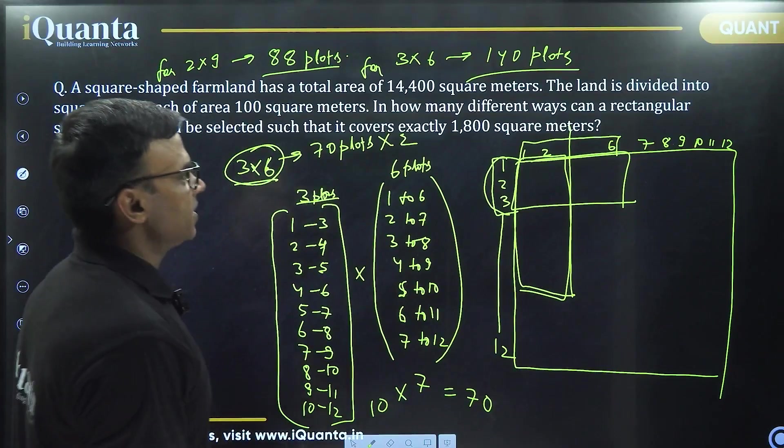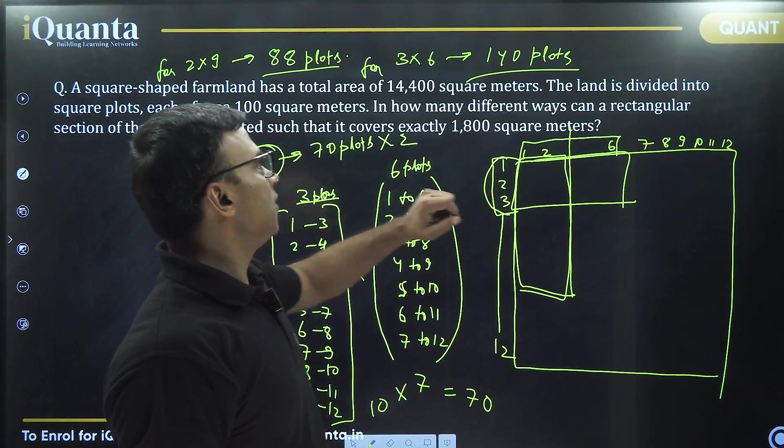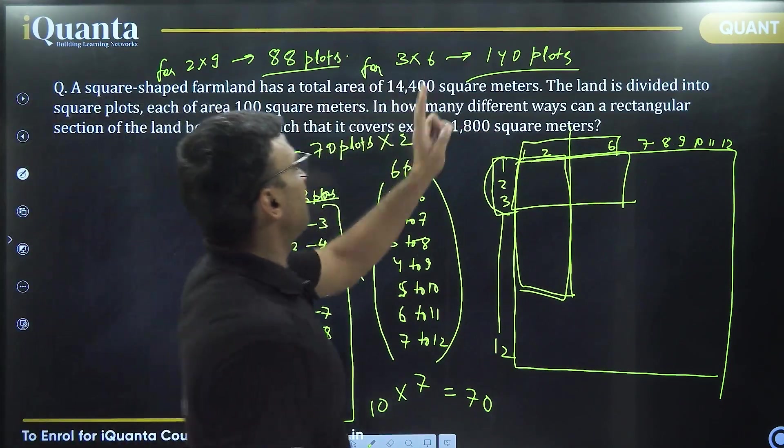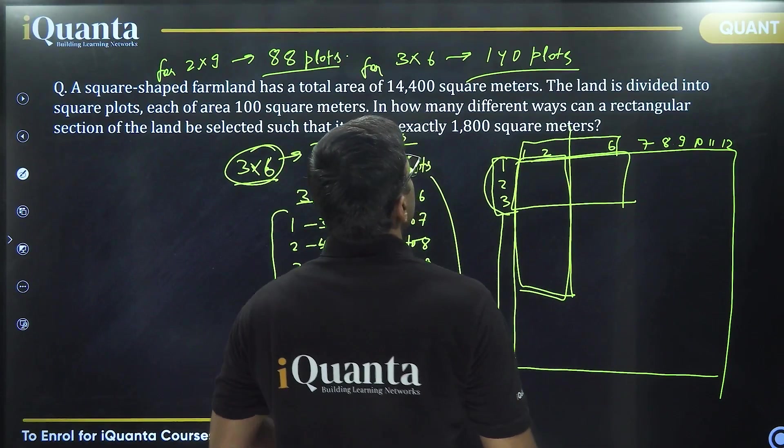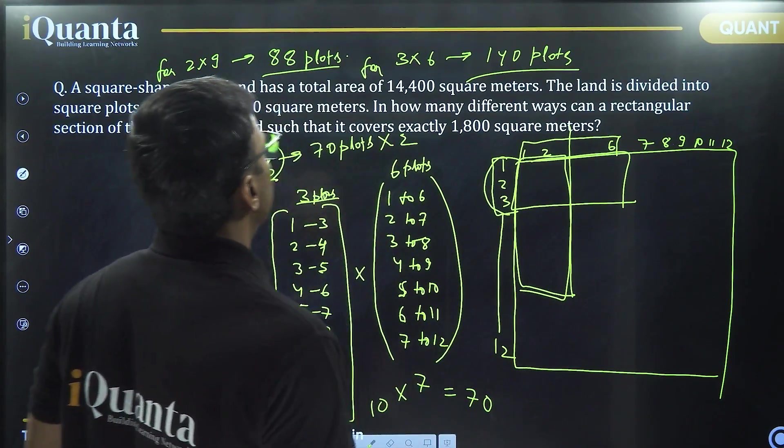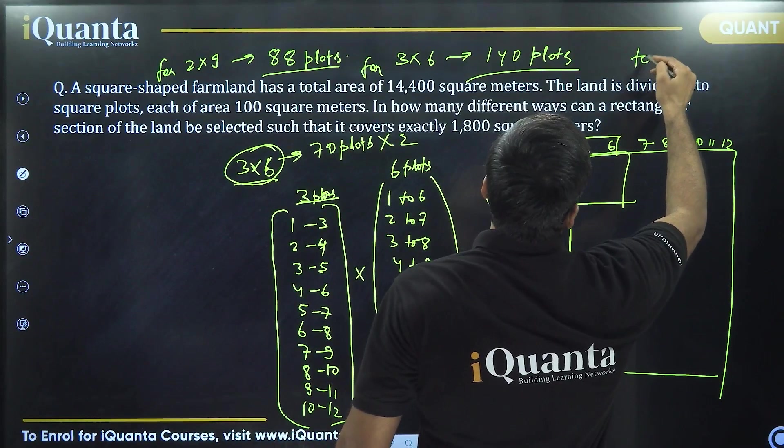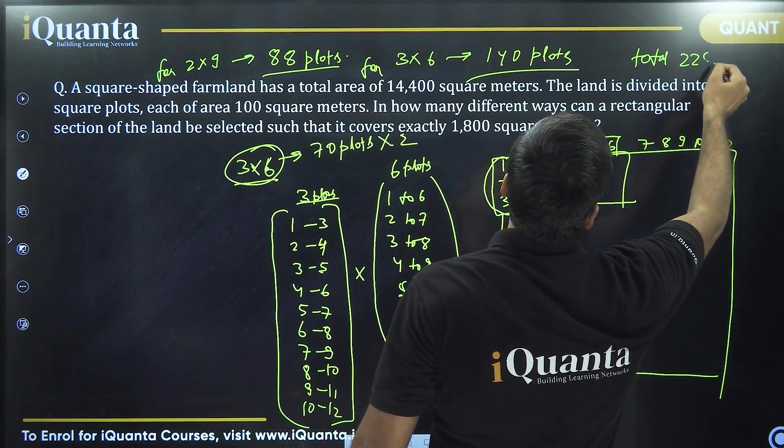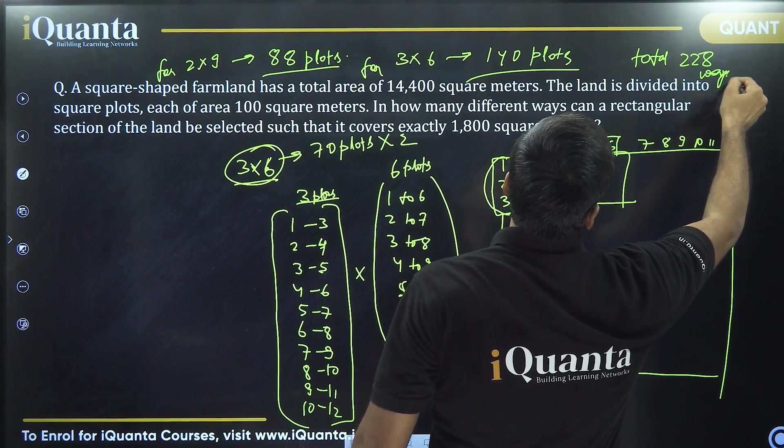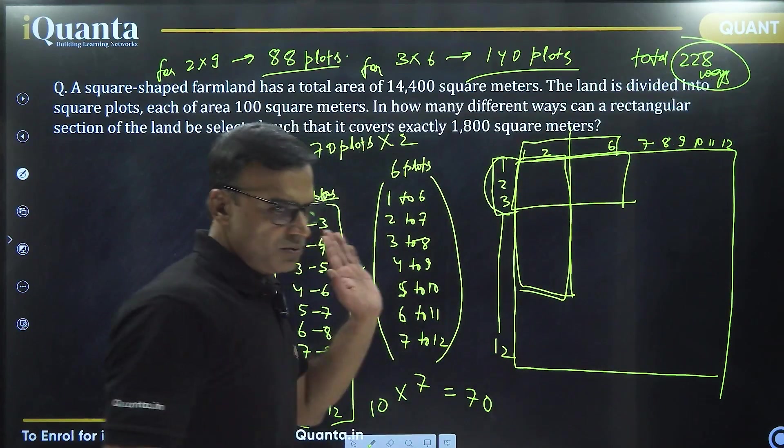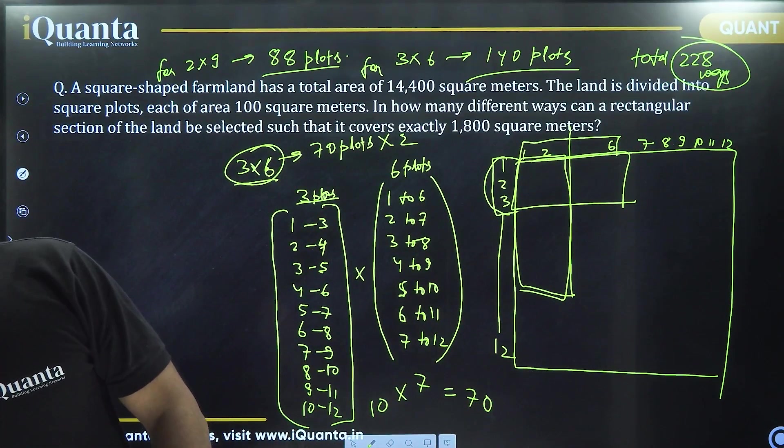So total number of possibilities, total number of ways would be 88 plus 140. 88 plus 140, so 228 total ways. This is the answer of this question. Please go through the video once again. If you still have trouble, you can always get back.